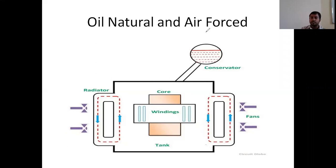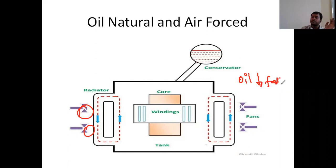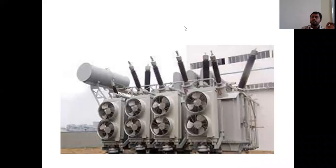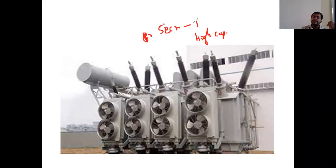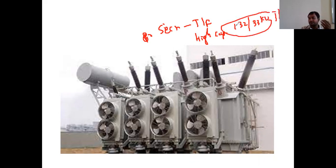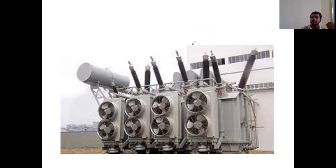In ONAF, by using the fans we provide forcible natural air. The high temperature oil temperature decreases very quickly. This is used for high capacity — secondary transmission side, such as 132 by 33 kV transformers. In the primary or secondary transmission side, this type of cooling system is used. You can see the radiator and eight fans available.